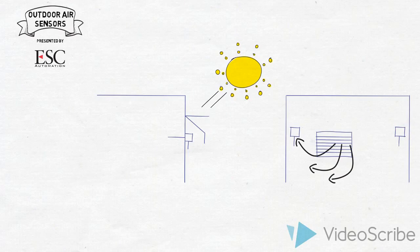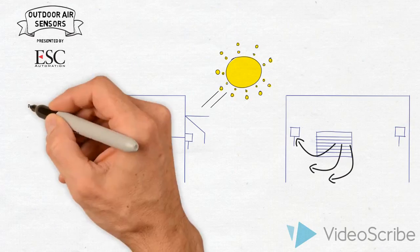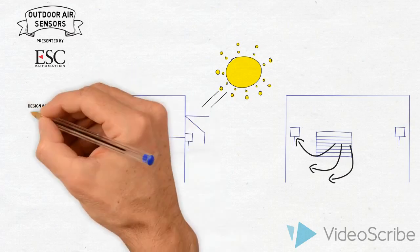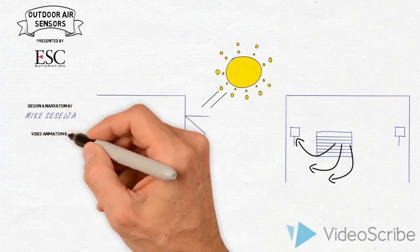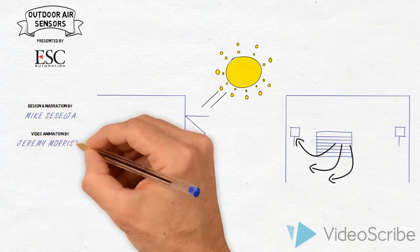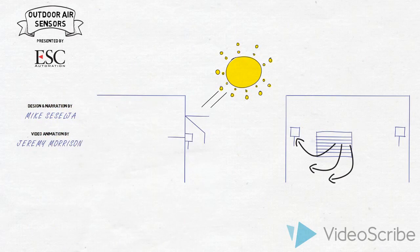So anything that you can see that's going to affect the outdoor air sensor, make sure you mount it away from it as much as possible and get a good dry shaded area for your outdoor air sensor. Thanks.